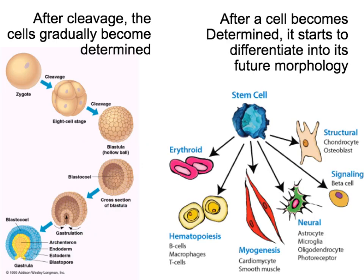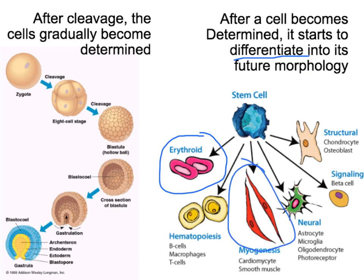On the other hand, when a cell is differentiated — first a cell has to be determined, and then it will be able to differentiate. When it differentiates, the morphology of the cell has changed. If it's becoming a red blood cell, it's going to look different from a cell that will become a muscle cell, and this difference is evident when you look at the cell itself. While in a determined cell, the difference is not visible — the cells have changed their gene expression, but you cannot see it in their morphology.